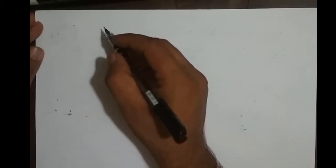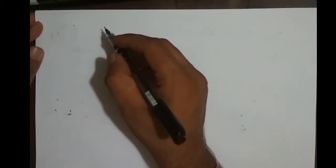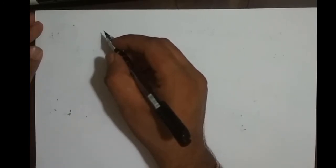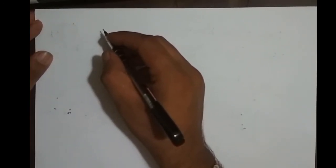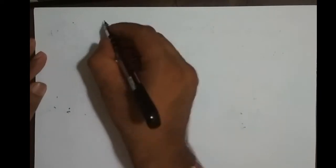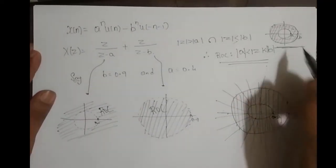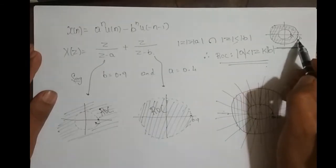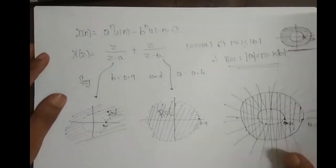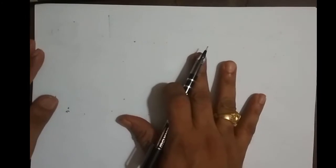Similarly, ROC of an infinite-length right-sided sequence is outside the circle with radius a; ROC of an infinite-length left-sided sequence is inside the circle with radius b; and ROC of an infinite-length double-sided sequence is a ring-shaped region in the z-plane between radius a and radius b, where a corresponds to the right-sided part and b to the left-sided part.